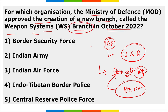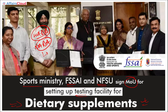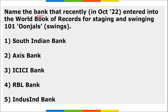The Sports Ministry, FSSAI, and NFSU signed an MoU for testing dietary supplements. The World Anti-Doping Agency (WADA) operates at global level, and the National Anti-Doping Agency (NADA) at national level — Sunil Shetty was appointed as brand ambassador of NADA. South Indian Bank entered the World Book of Records for staging and swinging 101 jhulas during an event in Kochi, Kerala.